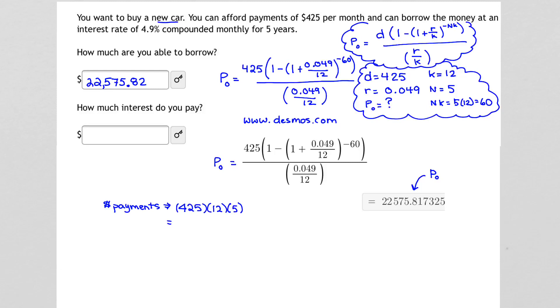That tells me that the total amount of payments that are made towards the loan are as follows. It's the product of $425 times 12 times 5, which is $25,500.